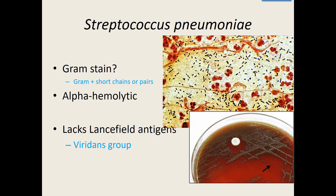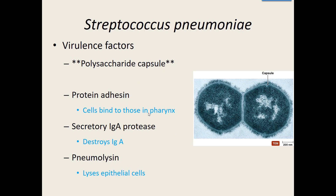One bacteria in the viridans group that is not generally part of your normal flora is Streptococcus pneumoniae — one of the bacteria we work with in our lab. When we gram stain it, it's gram-positive cocci, and it usually likes to hang out in pairs or really short chains. It is alpha-hemolytic and part of the viridans group — it doesn't have those A or B antigens. It does have a lot of virulence factors that allow it to cause disease.